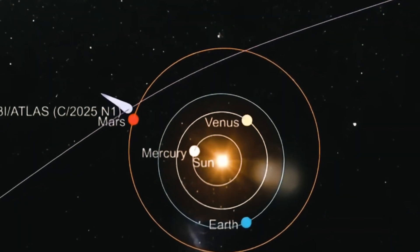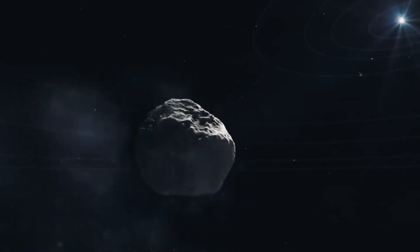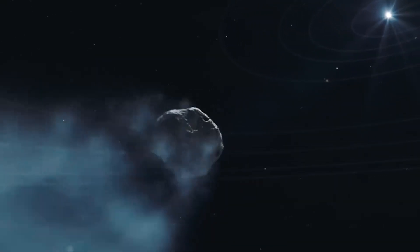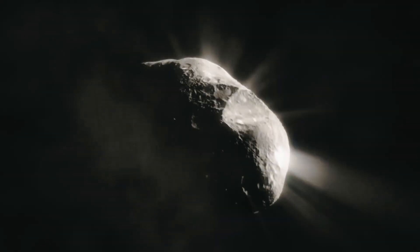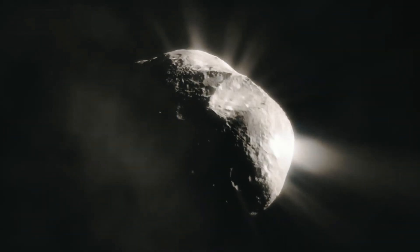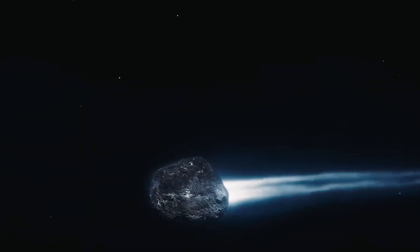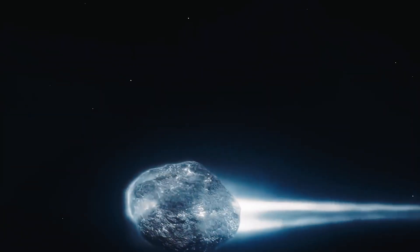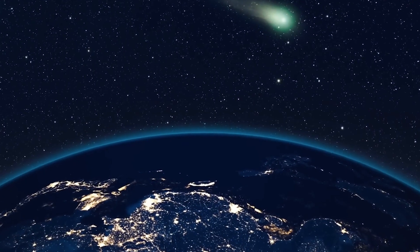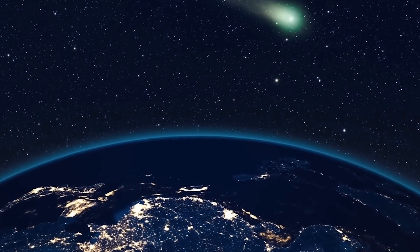3i Atlas has now soared past Mars and is speeding toward the Sun, entering one of the most critical and mysterious phases of its interstellar voyage. Astronomers are already picking up strange clues, powerful jets of water erupting far from the Sun and a coma unusually rich in carbon dioxide, hinting that this cosmic visitor is made of something very different from ordinary comets born within our solar system.